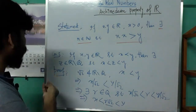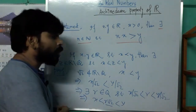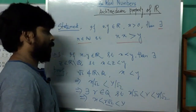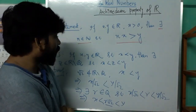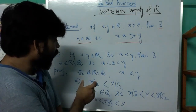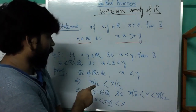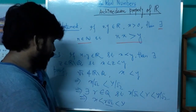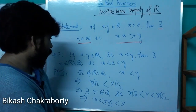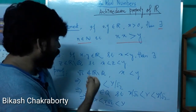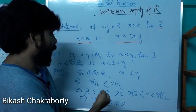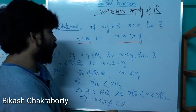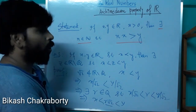Combining the previous two results, we can say that between any two real numbers there must exist at least one rational number and at least one irrational number — that is the meaning of 'dense' here. Later we will show that between any two real numbers there are infinitely many rational numbers and uncountably many irrational numbers. Thank you.